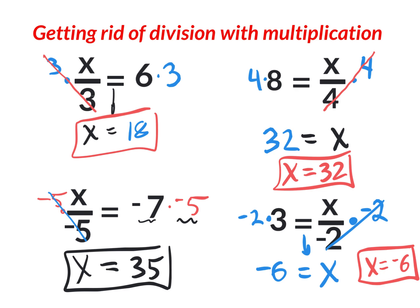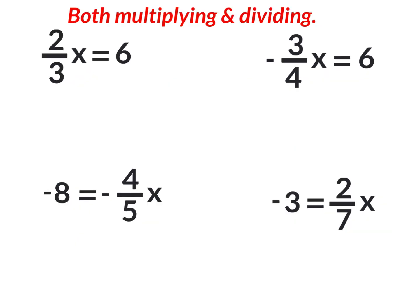Now what if you have both division and multiplication to get rid of? On these examples we need to get rid of both. The first way to think about it: this really says two-thirds times x equals six — a number times x. To get rid of the multiplication of a fraction you do the opposite: divide by that fraction. And when you divide by a fraction you really multiply by its reciprocal, which is what we learned when we multiplied and divided fractions.